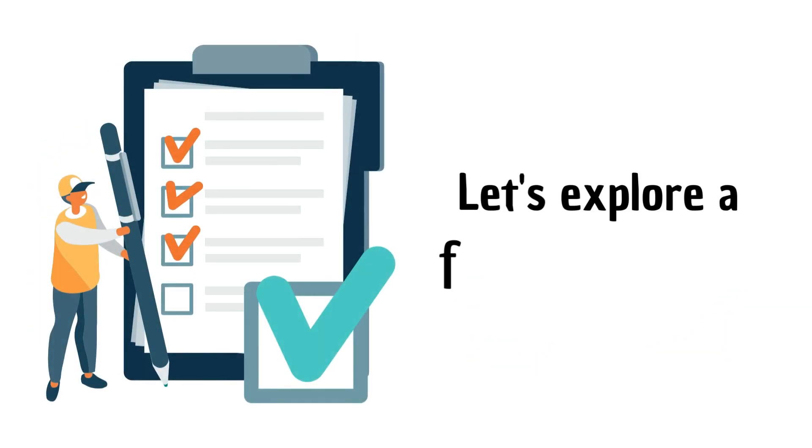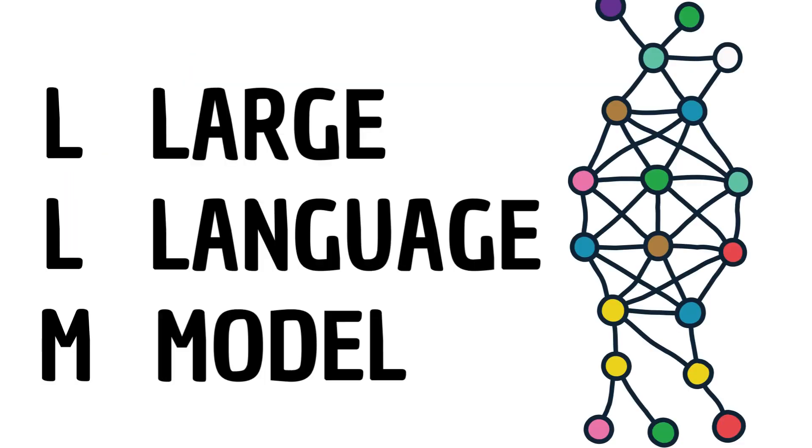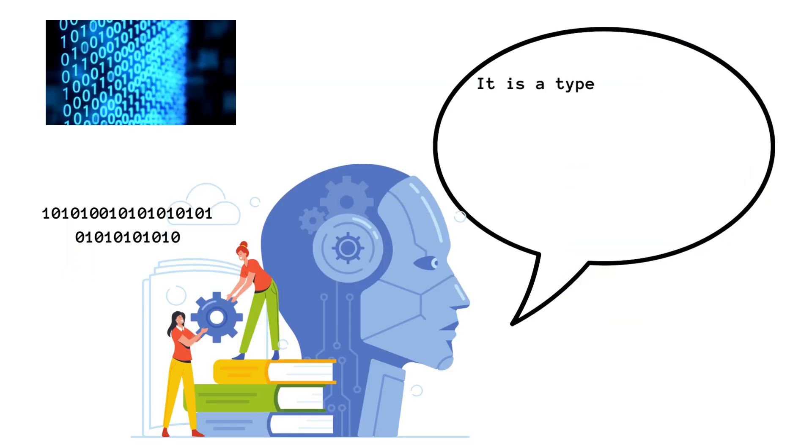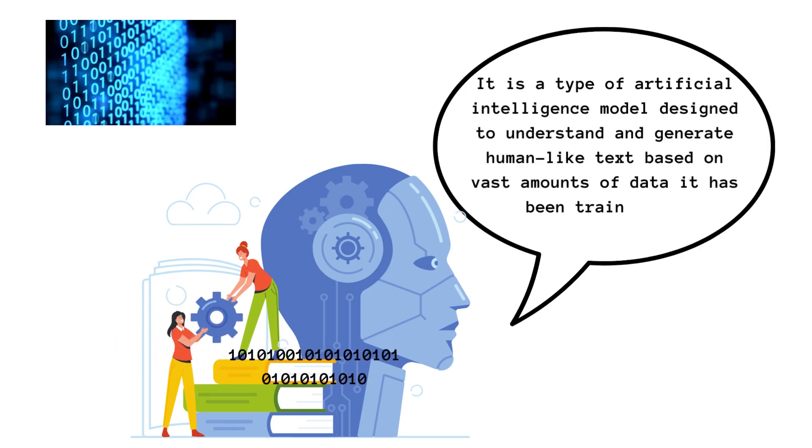Before we go further, let's discuss a few basic terms: LLM, GPT, and token. LLM, large language model, is a type of artificial intelligence model designed to understand and generate human-like text based on vast amounts of data it has been trained on.